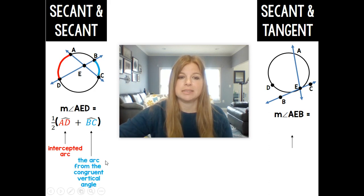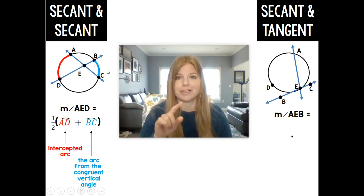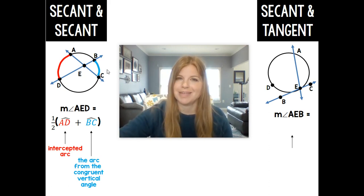Plus the arc that's created from the vertical angle. Now those arcs are not congruent to each other. The vertical angles are congruent to each other, but this is what we do. So the measure of angle AED is equal to one half the sum of the intercepted arc and its arc to its vertical angle. Interesting.